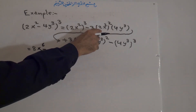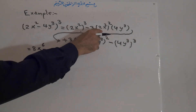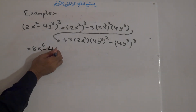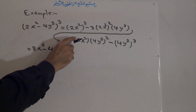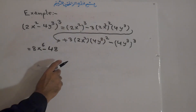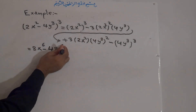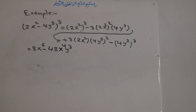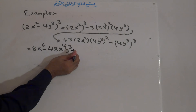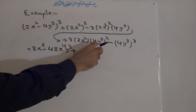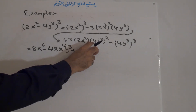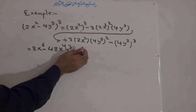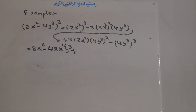For the second term: 2 squared is 4, and 4 times 3 gives 12 in the coefficient — working out to 48. Then (x squared) squared is x to the power of 4, and y cubed remains. So the second term is minus 48x to the power of 4, y cubed. For the third term: 4 squared is 16, and 3 times 2 is 6, and 6 times 16 is 96.